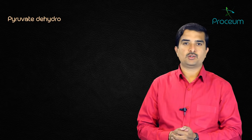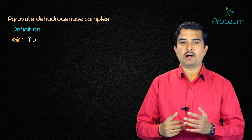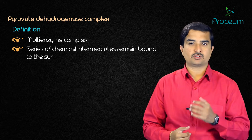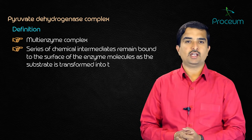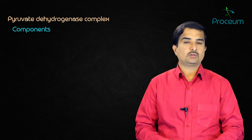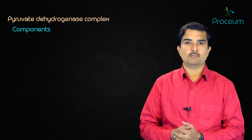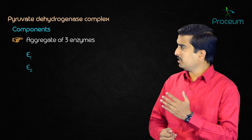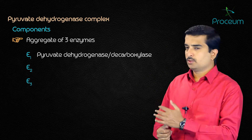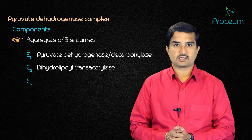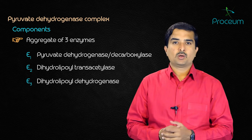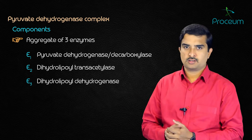The pyruvate dehydrogenase complex is a multi-enzyme complex in which a series of chemical intermediates remain bound to the enzyme surface as the substrate is transformed into the final product. It is a multi-molecular aggregate of three enzymes: E1, pyruvate dehydrogenase (also called decarboxylase); E2, dihydrolipoyl transacetylase; and E3, dihydrolipoyl dehydrogenase. Each enzyme catalyzes a part of the overall reaction.